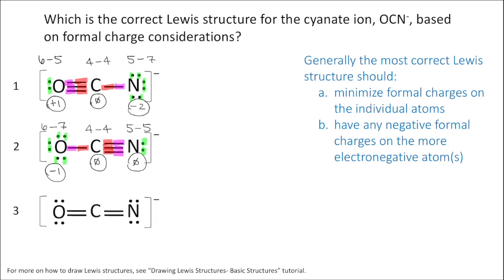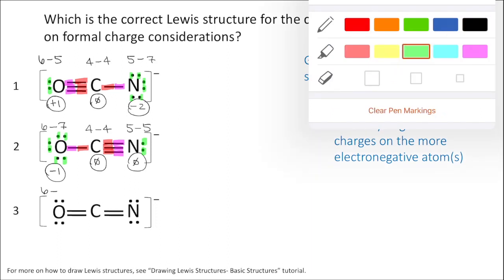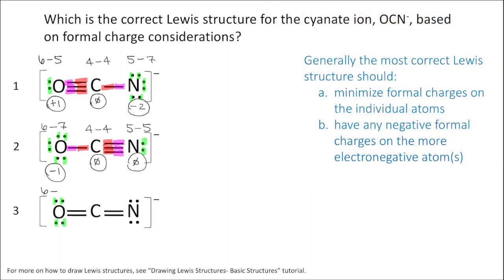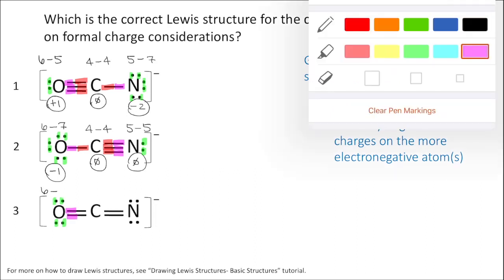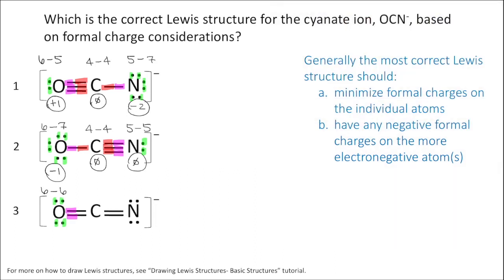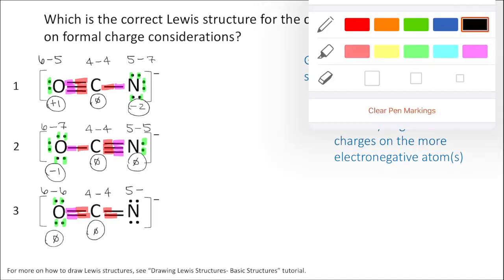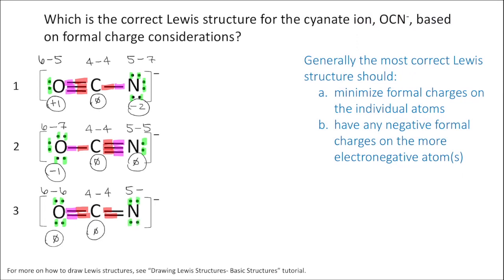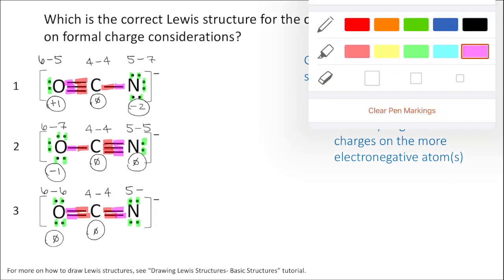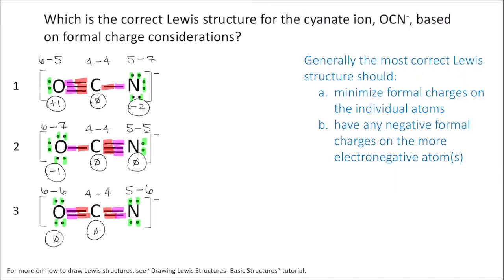For structure three: oxygen has six valence electrons and I've assigned it six electrons, so oxygen has a formal charge of zero. Carbon has four valence electrons and I've assigned it four electrons, so carbon has a formal charge of zero. Nitrogen has five valence electrons and I've assigned it six electrons, so nitrogen has a formal charge of negative one.